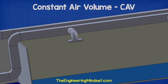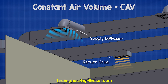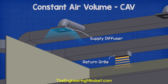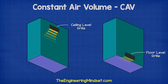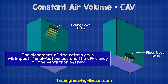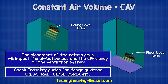The air is then circulated around the room and pushes the dirty used air into the return grill. The return grill is typically on the opposite side of the room, sometimes at floor level and sometimes at ceiling level. The placement of the return grill will impact the effectiveness as well as the efficiency of the ventilation system. Various industry bodies will provide guidance on the design of such a system.